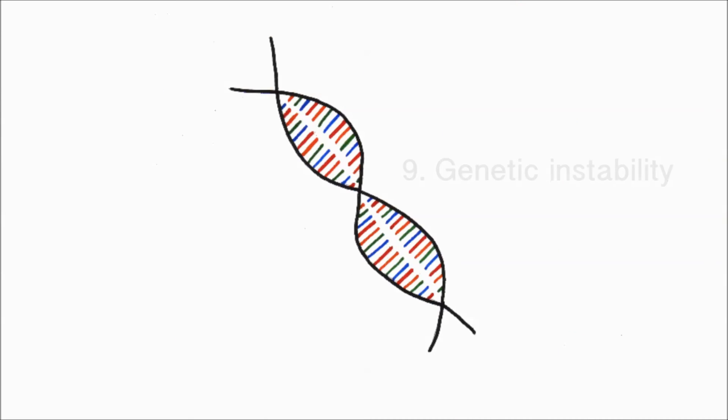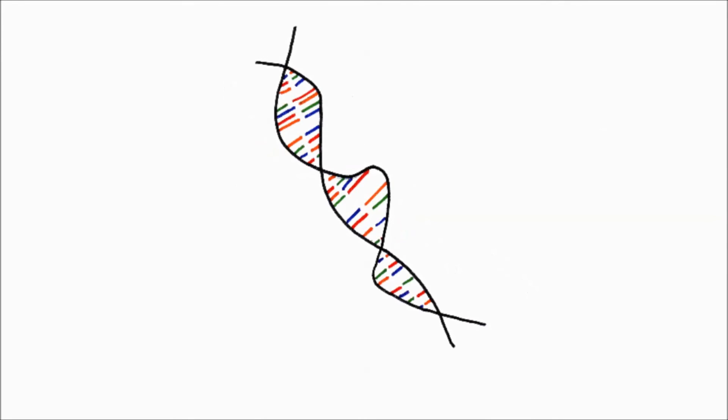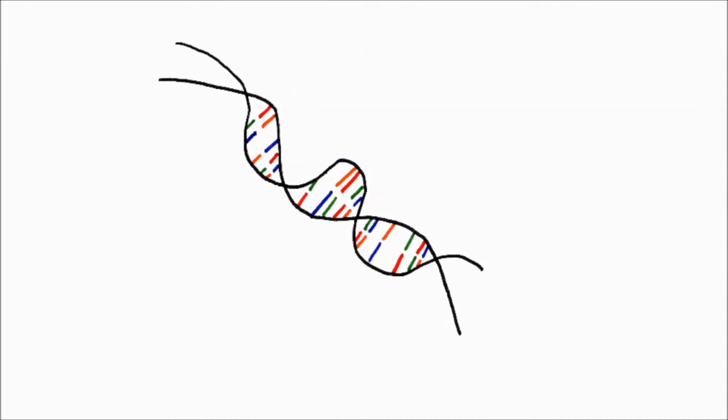Number nine, genetically cancer cells are different from normal cells. They have unstable DNA, enabling them to constantly mutate, evolve and acquire other characteristics.